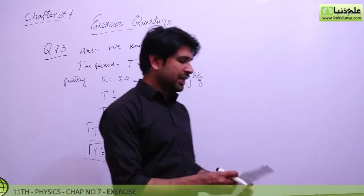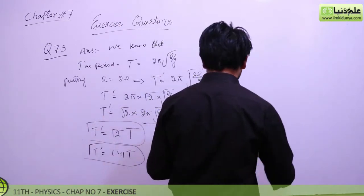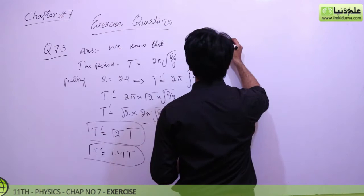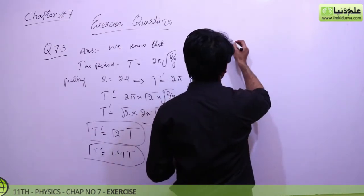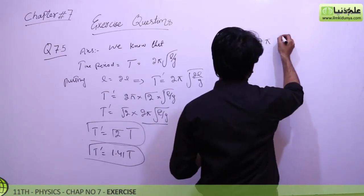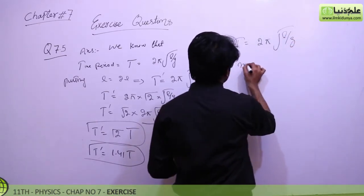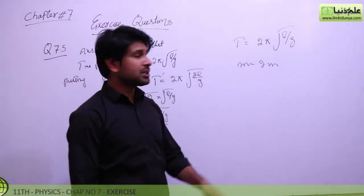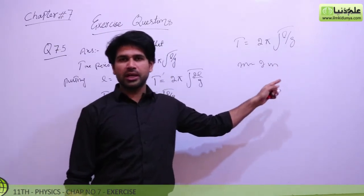Now for the second part, if we double the mass: we again write the time period formula T = 2π√(l/g). The question says to double the mass, but students, we can see here that there is no relation of mass in the time period formula.